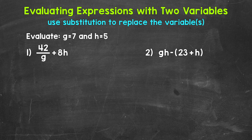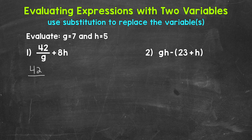Let's jump into number 1, where we have 42 over g plus 8h. Now 42 over g means 42 divided by g, and 8h means 8 times h. The first thing we need to do is replace or plug in the given values for the variables — this is called substitution. So let's plug in 7 for g and 5 for h and rewrite this expression: 42 over 7, plus 8 times 5.